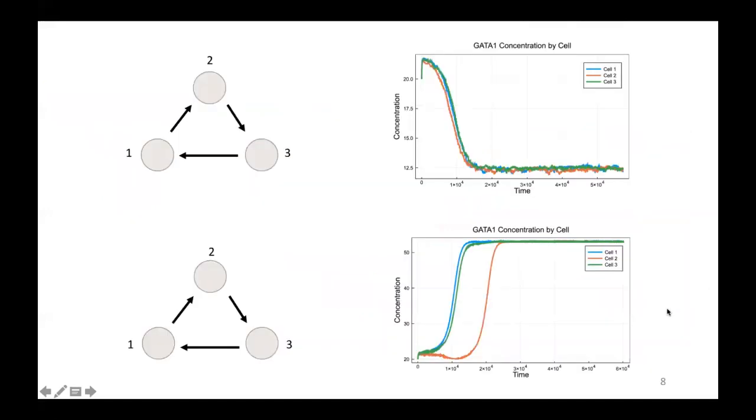Next, we'll look at a few more sample trajectories. So these two demonstrate fate consensus. So all of the cells are coordinating their fate in a given run.